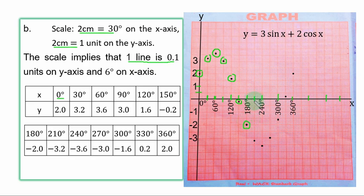When s is 210, y is minus 3.2. After minus 3, you count 2 lines down. When s is 240, y is minus 3.6, somewhere here. When s is 300 degrees, y is minus 1.6. When s is 330 degrees, y is 0.2, somewhere here. And when s is 360 degrees, y is 2, somewhere here.